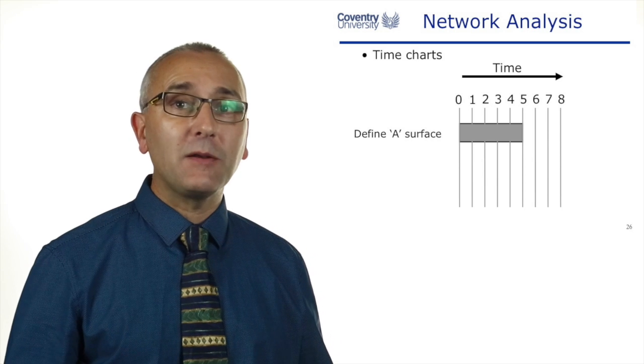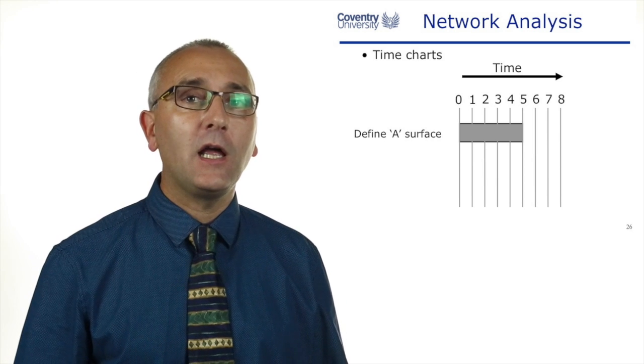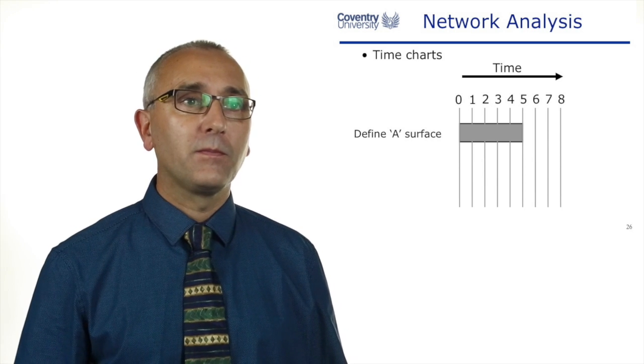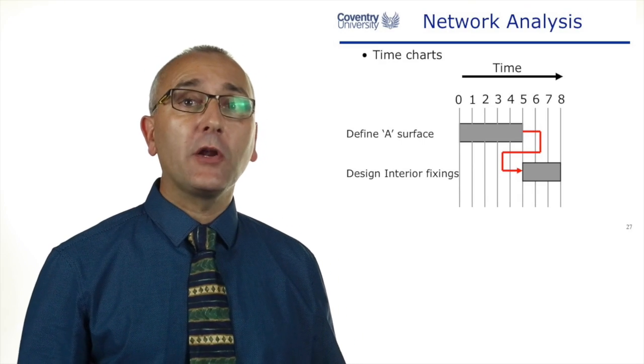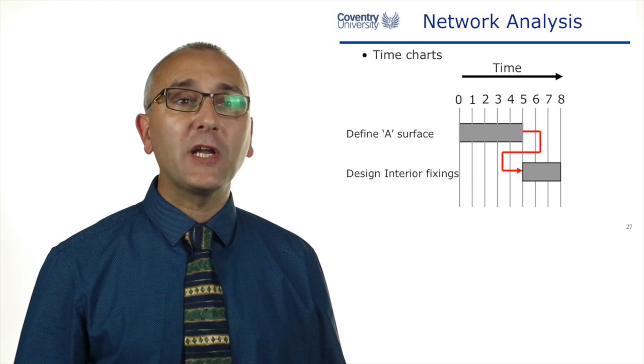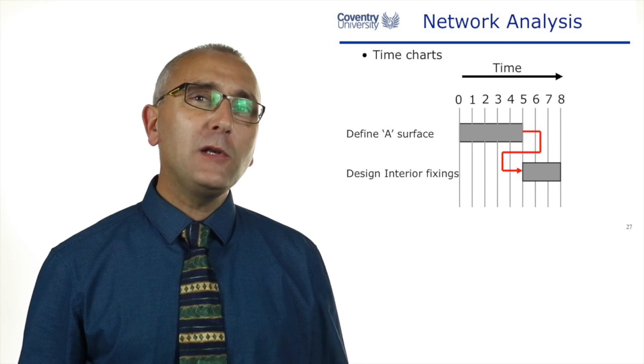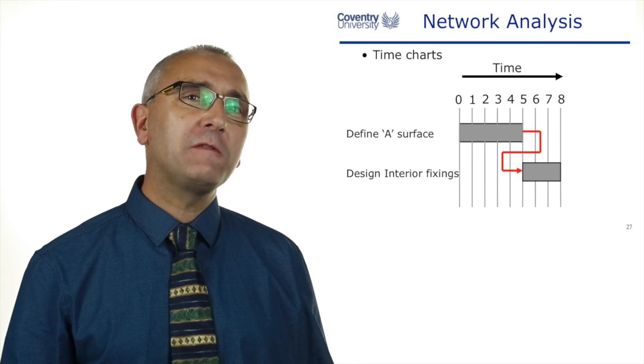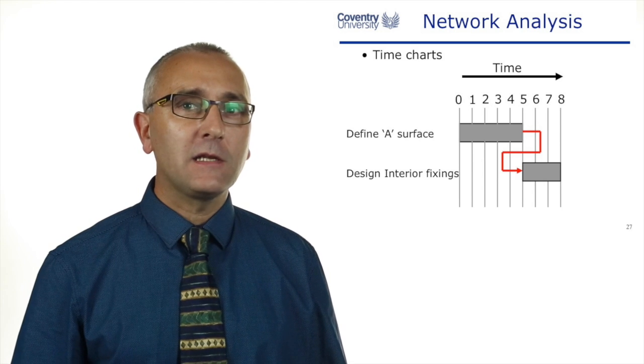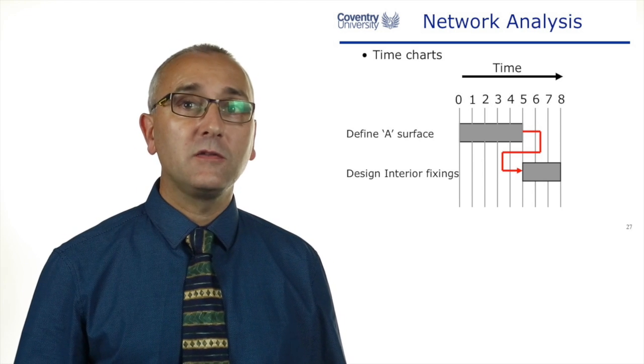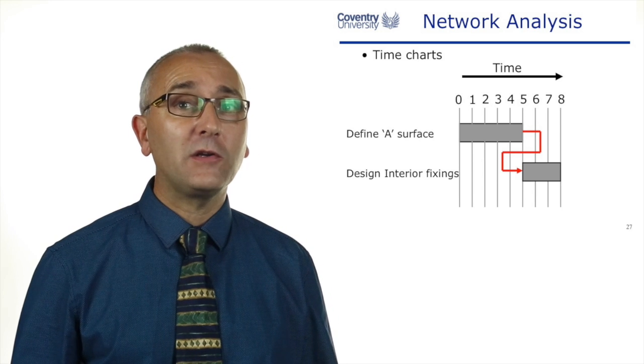A timing chart or a Gantt bar—we'll look at Gantt charts later in this lecture. Our dependencies are shown usually on a Gantt bar with an arrow connecting them. If we look at these two tasks, if the first task takes five days, I can't start the second task until the beginning of day five.